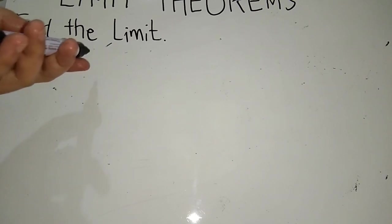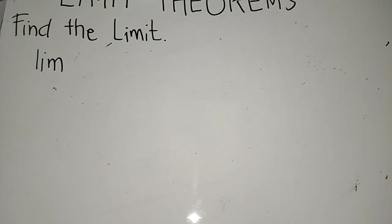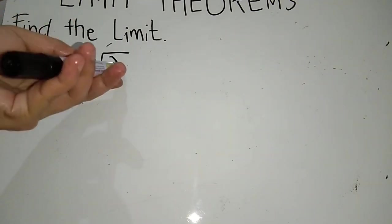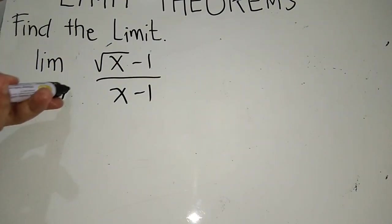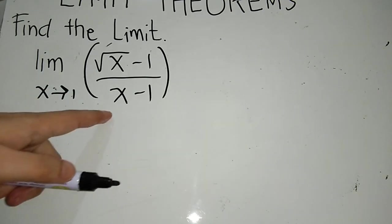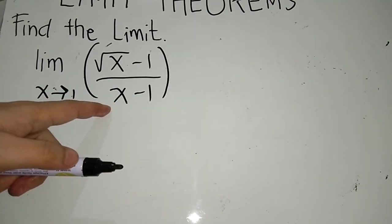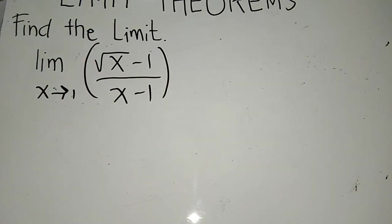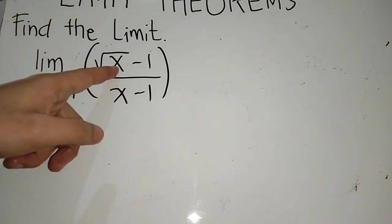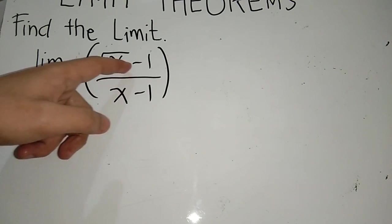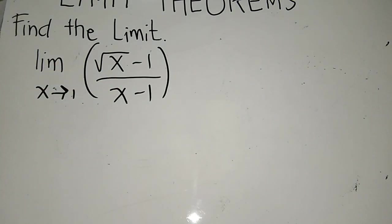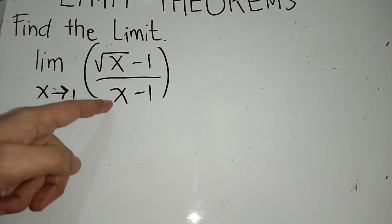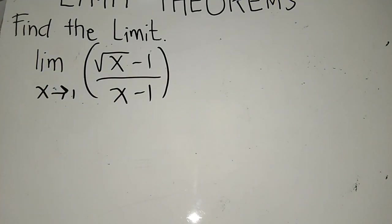Another example: the limit of the square root of x minus 1 over x minus 1 as x approaches 1. This is a rational function where the numerator contains a radical expression. If we directly substitute x with 1, the numerator becomes square root of 1 minus 1 which is 0, and the denominator is 1 minus 1 which is also 0 — that is indeterminate, so we must avoid 0 over 0.